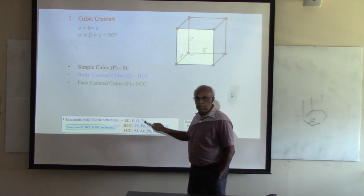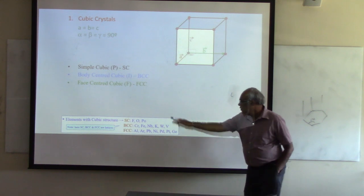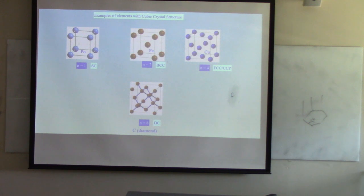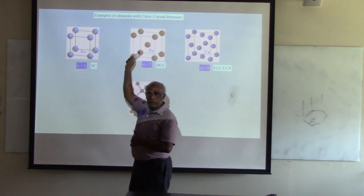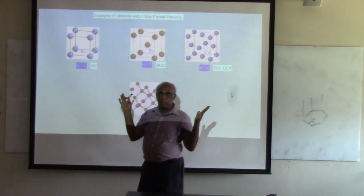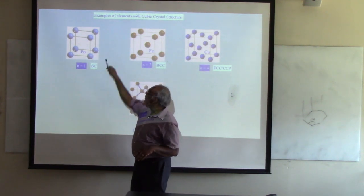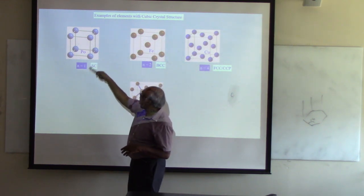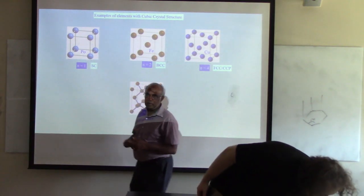For body-centered, we call it 'I' — there's one at the center. Polonium is the only solid element that is simple cubic. For simple cubic, you have one over eight per corner times eight corners, giving you one lattice point total. For body-centered, you get one from the corners plus one additional at the center, giving you two.